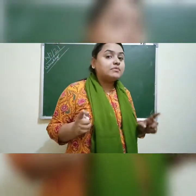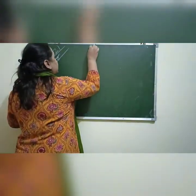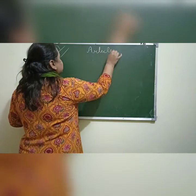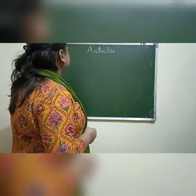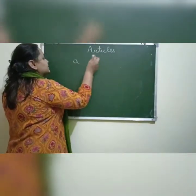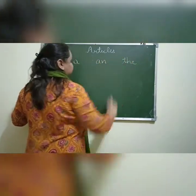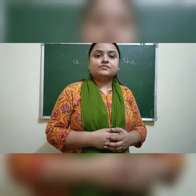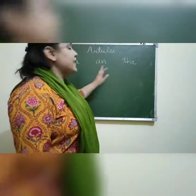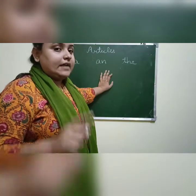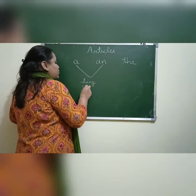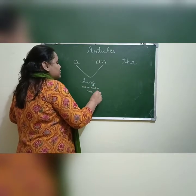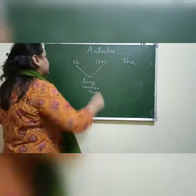Now children, in the last grammar class, we studied about articles. Can you tell me which are the three articles? The three articles that I told you were A, AN, and THE. In the last class, we have already studied about A and AN. We have studied about article A and AN, and A and AN are used with singular common nouns.